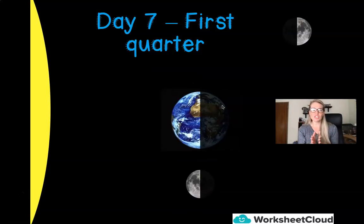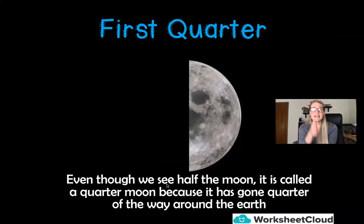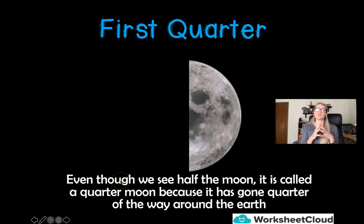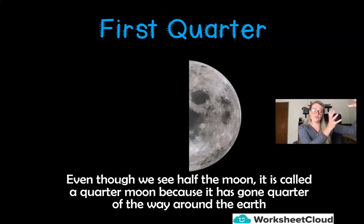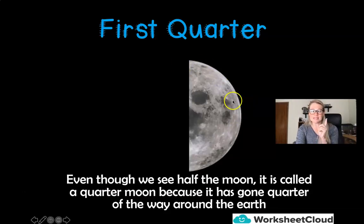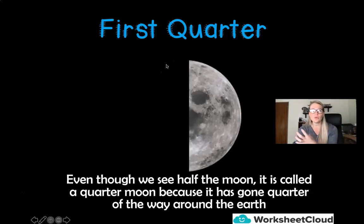The next phase is called the first quarter. From that little sliver, we now have exactly half of the moon lit. We don't call it a half moon — the reason why we call it the first quarter is because the moon has now traveled a quarter of its journey. Because there are eight phases, the first quarter of its traveling is at this particular place and we see half of the moon.